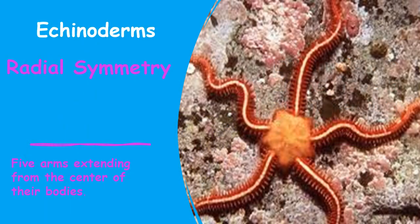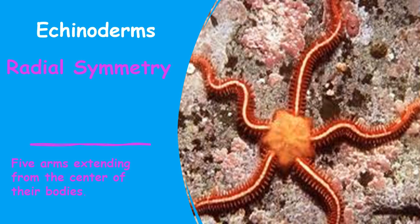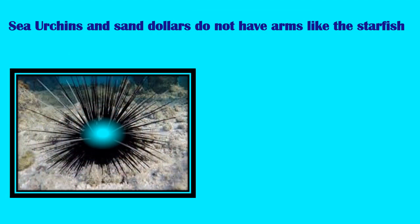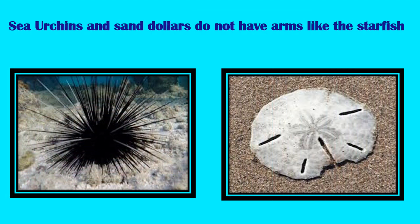Enkinoderms are uniquely shaped animals. They have radial symmetry, which means five arms extending from the center of their bodies. The sea urchins and sand dollars are examples of enkinoderms, but they do not have arms like the starfish.